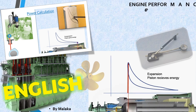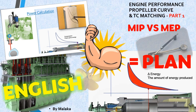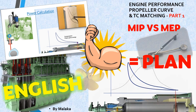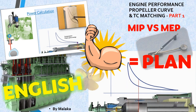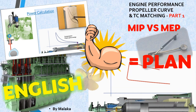Engine performance, propeller curve, and turbocharger matching — part 1: MIP vs MEP. In today's video I am going to discuss mean indicated pressure and mean effective pressure, indicated power and effective power, using the PLAN equation — how we can calculate the indicated power as well as effective power, and how to calculate the area using a planimeter, and then how to calculate the power.